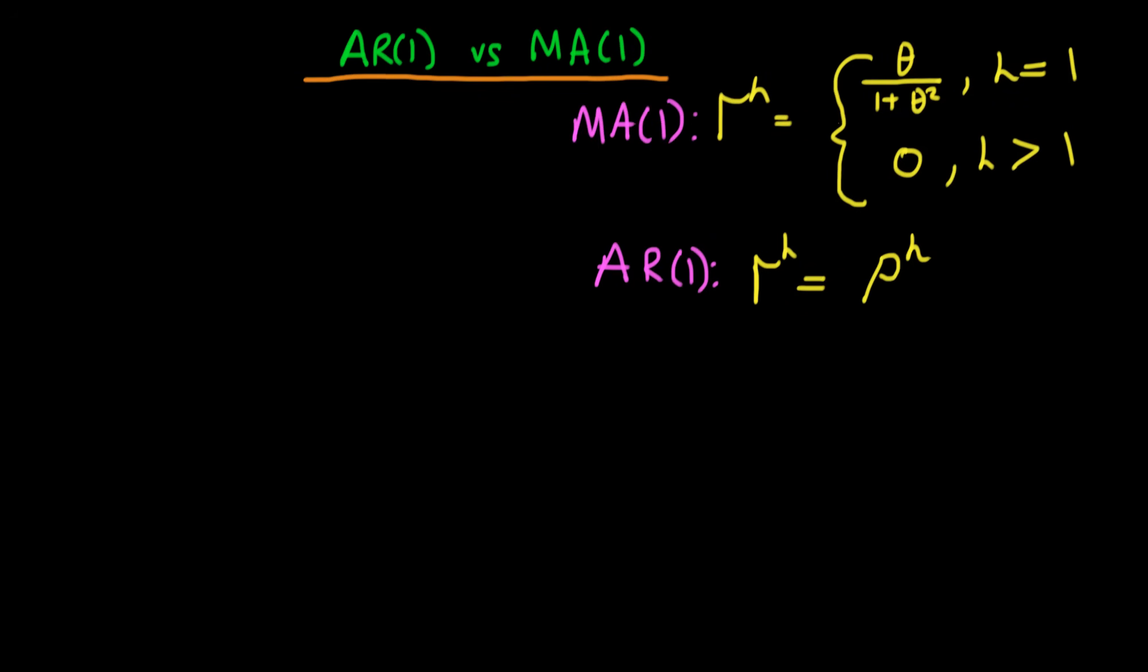In this video I want to continue our discussion of how we diagnose whether we have an AR(1) process or whether we have an MA(1) process. To do so we need to note the covariances which we derived in the last video. For an MA(1) process the covariance looks something like this where often we use the Greek symbol gamma to represent the correlation.